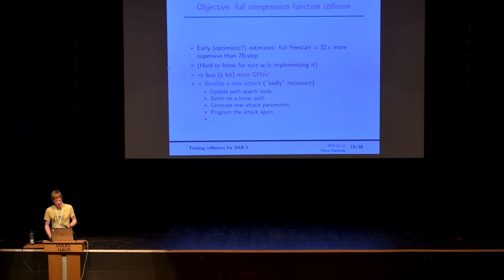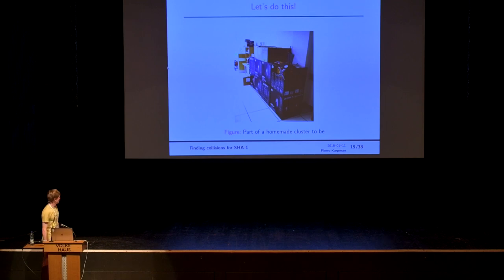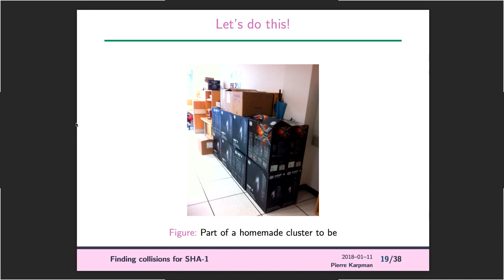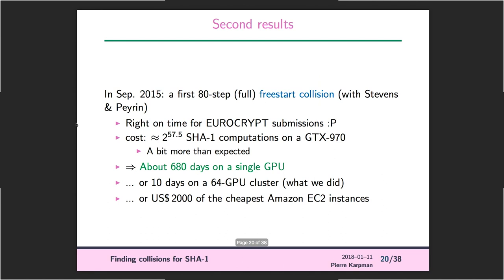You have to do everything again. That was the cluster waiting in the office in Singapore at the time. In September 2015 we got what we wanted: a full free-start collision — the closest thing to the real attack, though not the full hash attack — again with Stevens and Perrin.